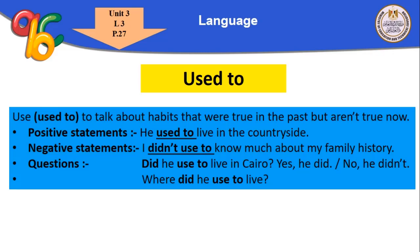For questions, we use 'did.' For example: 'Did he use to live in Cairo?' We bring the auxiliary verb 'did' to the front. Yes/no answer: 'Yes, he did' or 'No, he didn't.'